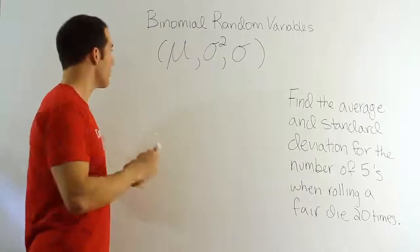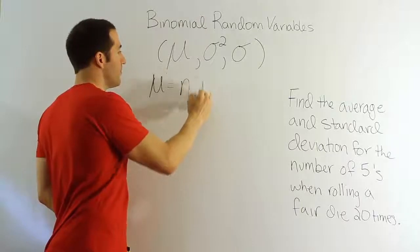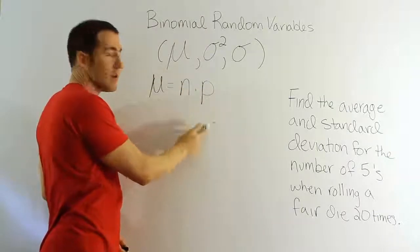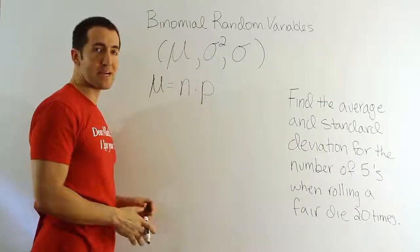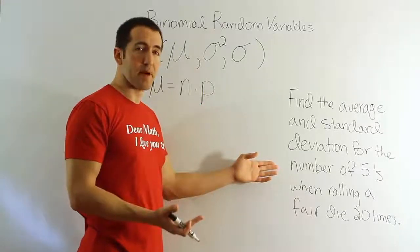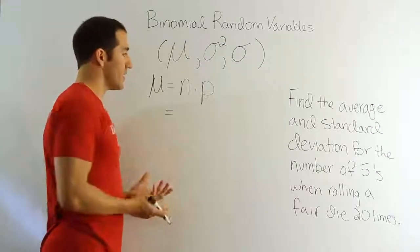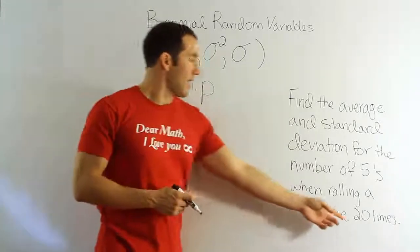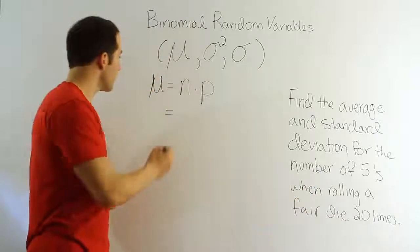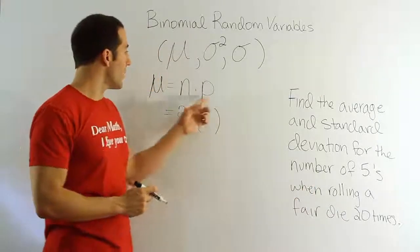The mean is actually a very simple formula. The mean is going to be just n times p, where n is the number of trials, and p is the probability of success. Now in this problem, a success is getting a 5 because this problem is about rolling fives. So let's figure out these two quantities for this problem. n is the number of trials total, that's going to be 20, and p is going to be 1 sixth.